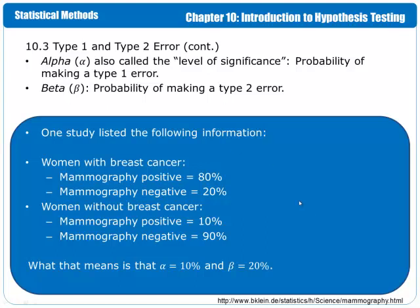So one study on the internet listed the following information as a result of breast cancer screening. For women with breast cancer, it was shown that 80% of the mammography results were considered positive, while 20% were negative. For women without breast cancer, 10% were positive and 90% were negative. What that means is we have 20% false negatives and we have 10% false positives.